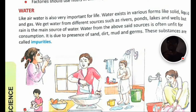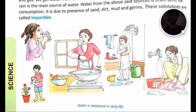We get water from different sources such as rivers, ponds, lakes, and wells, but rain is the main source. Water from the above-said sources is often unfit for consumption — consumption means to use. We use water for various purposes. The water is unfit because of the presence of sand, dirt, mud, and germs. These substances are called impurities.